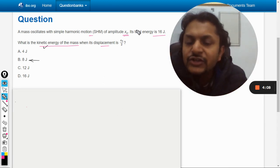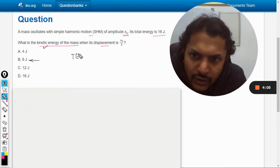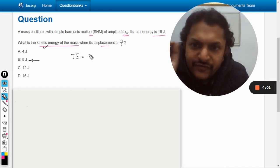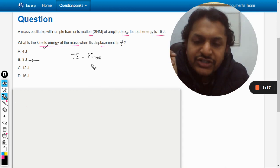So first of all, what is the background of this knowledge? Background is like the total energy contained in the system will be equal to the maximum potential energy which is going to happen at the extreme positions.